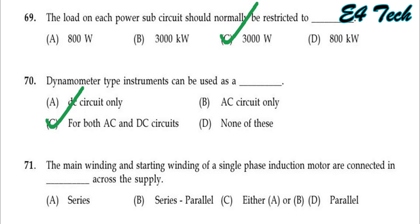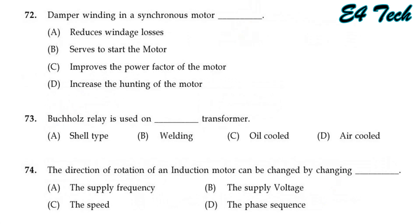The main winding and starting winding of a single-phase induction motor are connected in parallel across the supply. That is Option D.